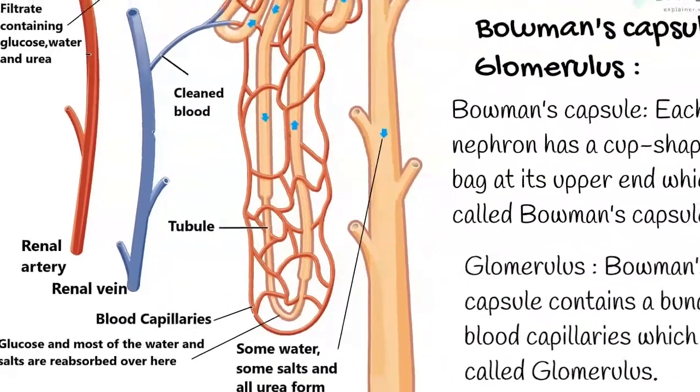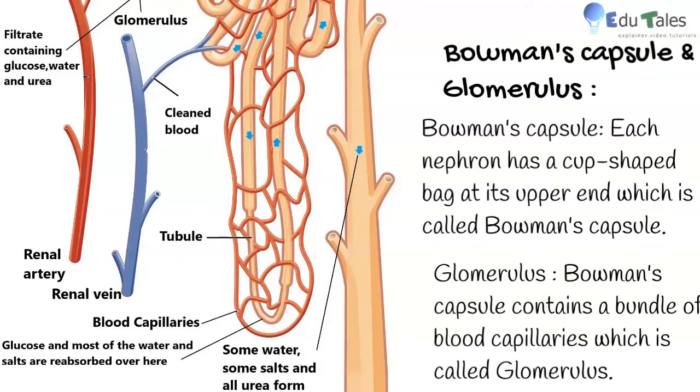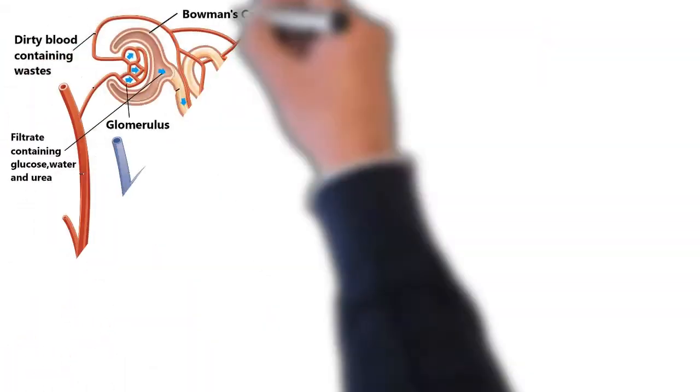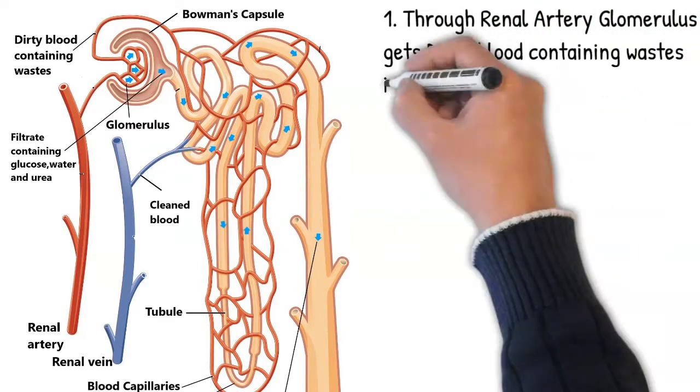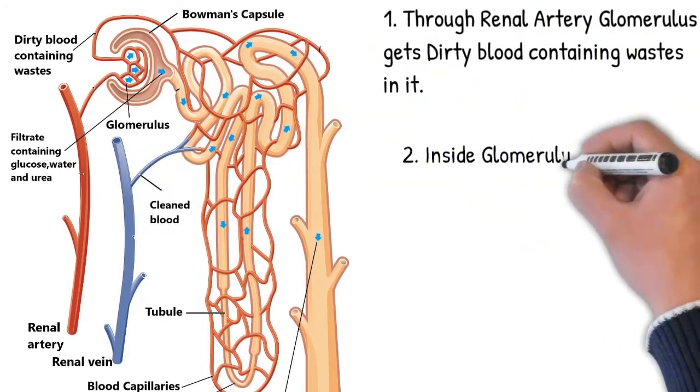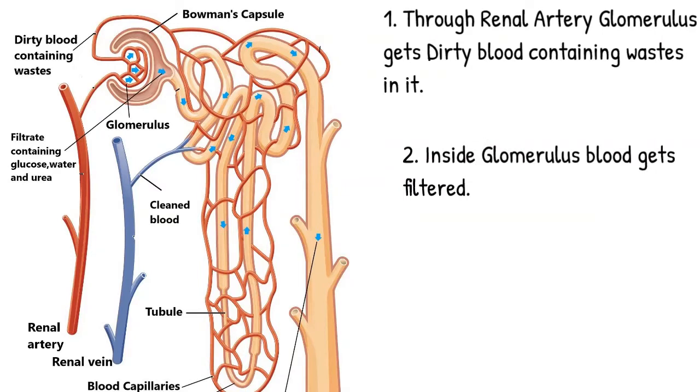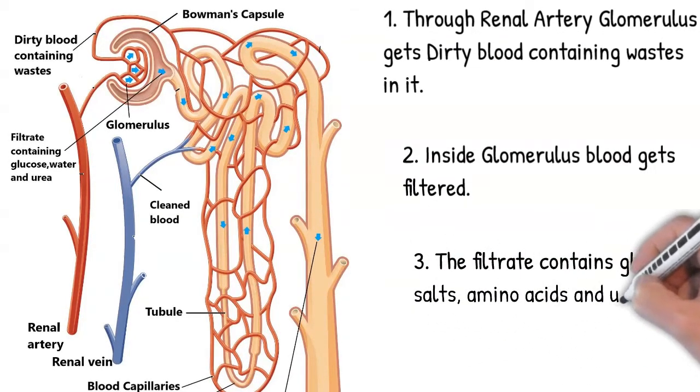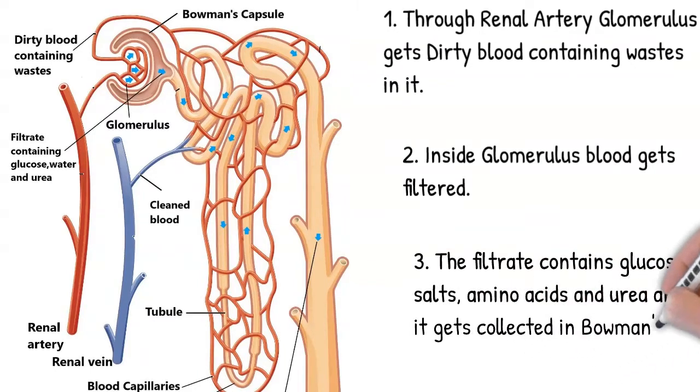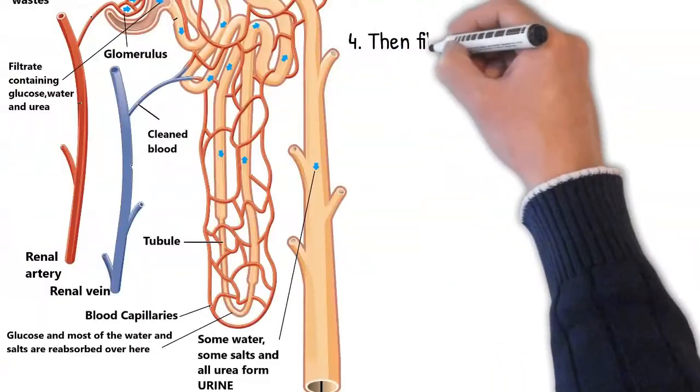So what exactly happens here? First, through renal artery, for location see in the diagram, glomerulus gets dirty blood containing wastes in it. Inside glomerulus, blood gets filtered due to pressure. The filtrate contains glucose, salts, amino acids, and urea, and it gets collected in Bowman's capsule.